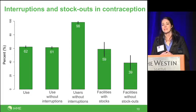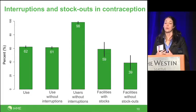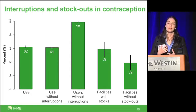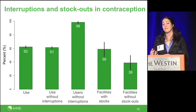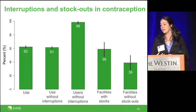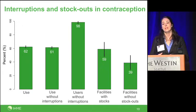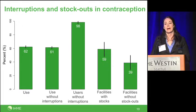When we put this information together, we find that 62% of women reported any use of contraception in the past year, and 61% reported use without interruptions — meaning 98% of women who used contraception had no interruptions. But at the same time, only 59% of facilities had basic stocks of contraceptives, and only 39% had supplies without stock outs. We're seeing an inconsistent story: women report very few interruptions while facilities have lots of stock outs. Perhaps women don't know when their coverage is interrupted, and more investigation would be needed.